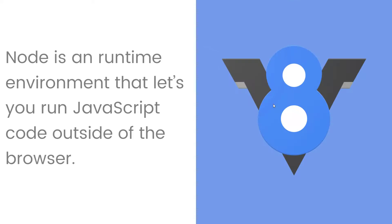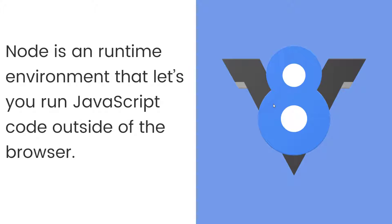So what is Node.js? Node.js is a runtime environment which utilizes Google's V8 engine that lets you run JavaScript code outside of the browser. Don't be confused here — Node is a runtime environment, not a back-end language. The language you use to write the code is JavaScript.